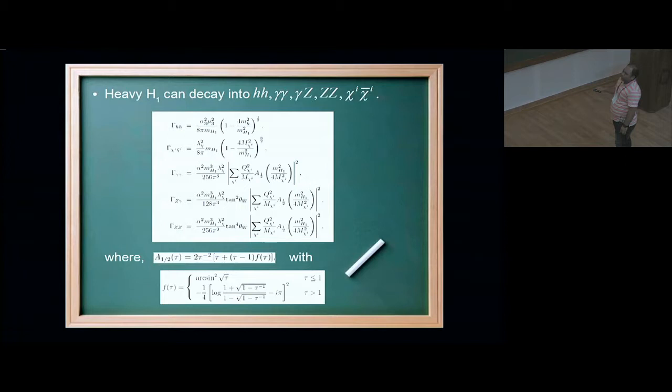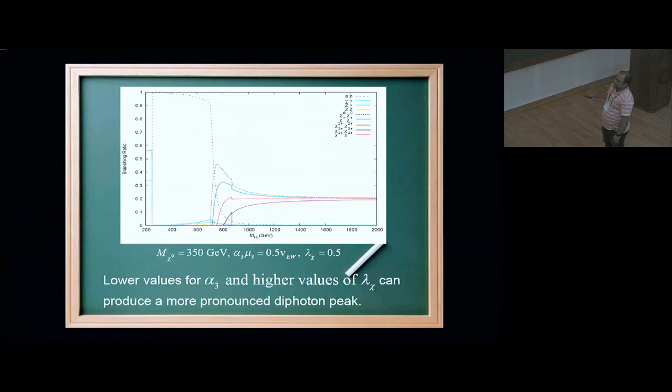These are the various decay channels for this heavy scalar H1. So it can go into HH, gamma gamma, Z gamma, ZZ, and two chi fields also. So chi plus chi minus, or chi two plus chi two minus, chi zero chi zero. And this is a plot of the branching ratio. You see that at low mass, when the chi threshold has not yet been reached, Higgs is the main decay channel. So my heavy Higgs will go into two light Higgses. And there is a small gamma gamma thing here. Once this threshold opens up, most of the decay is into the chi fields. But this gamma gamma doesn't have to be very small, it can be quite substantial, depending on this alpha 3 and lambda chi coupling.